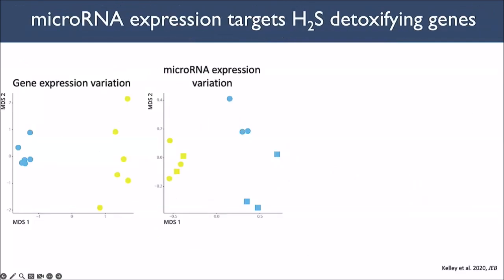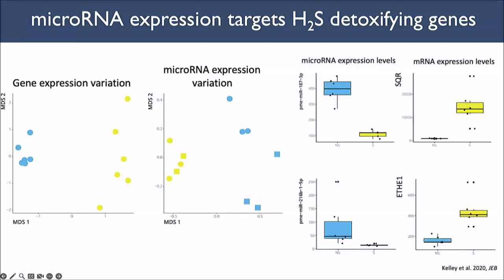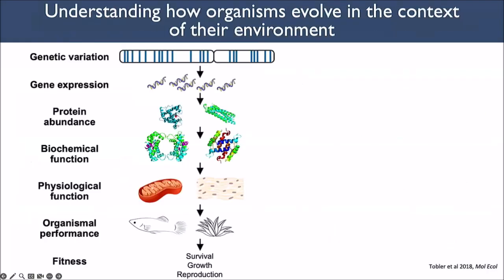We're asking similar questions of microRNAs. Looking at gene expression variation alongside microRNA expression variation, we can associate microRNA expression levels with mRNA expression levels by identifying the targets of those microRNAs. We identified which microRNAs are differentially expressed and then asked what are their putative targets. One interesting example: one of our identified microRNAs targets SQR — the sulfur quinone oxidoreductase — and as the microRNA level is low, the SQR mRNA expression levels are high.